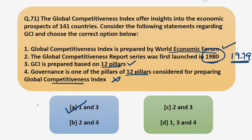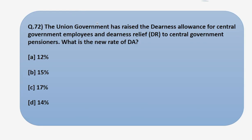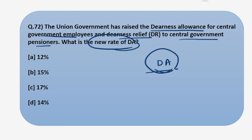Now let's move to the next question. The Union government has raised the dearness allowance for central government employees and dearness relief for pensioners. What is the new rate of DA? So first let us understand what DA is in the next slide and then we'll come back to the question.